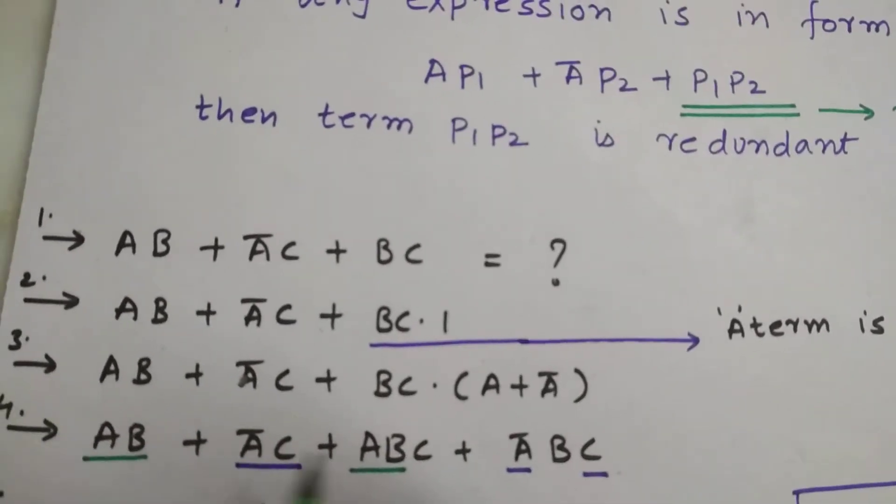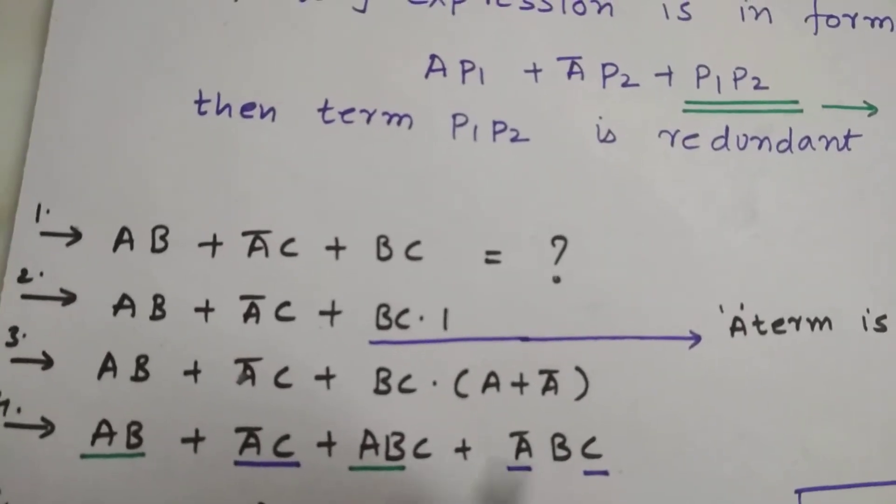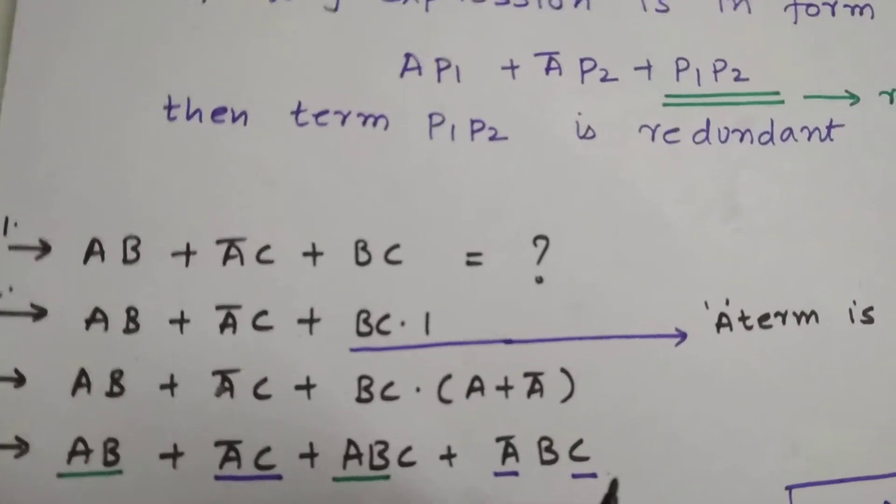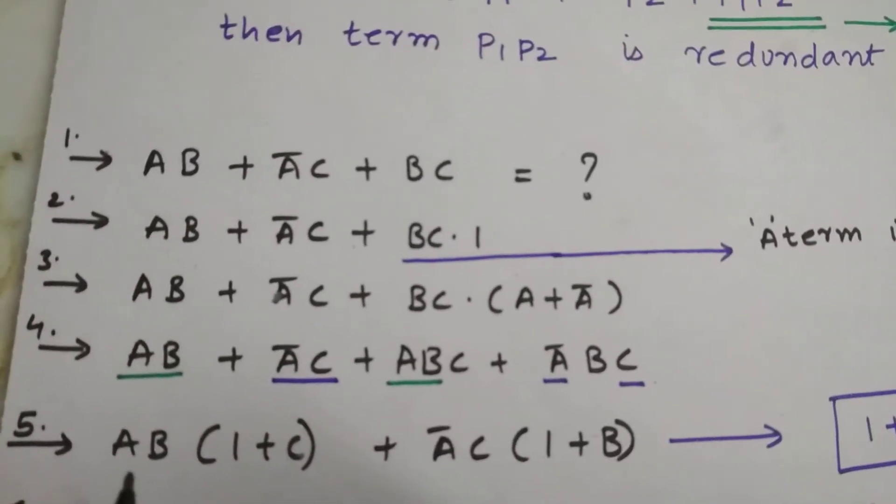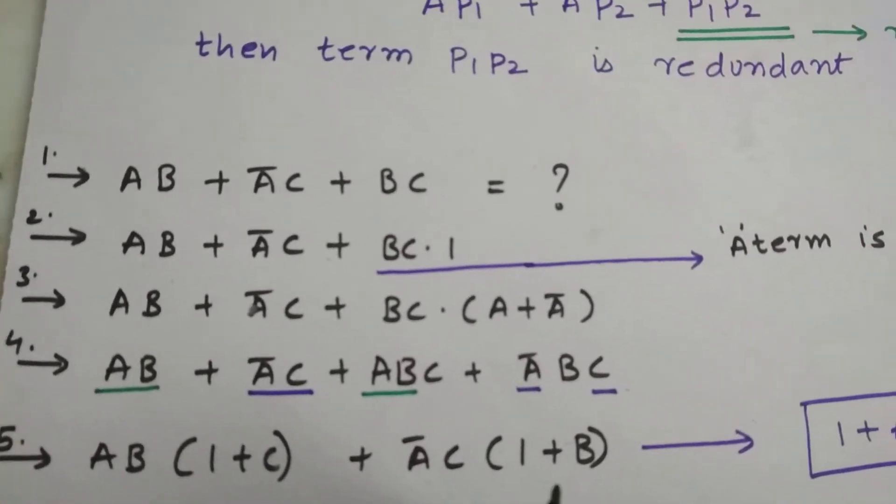As you can see that AB is common over here. We are going to take AB common and A bar C common in first and third, second and fourth term. So after taking common, we'll get the expression like this: AB into 1 plus C, plus A bar C into 1 plus B.